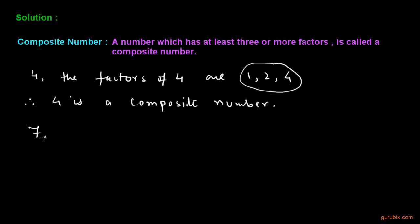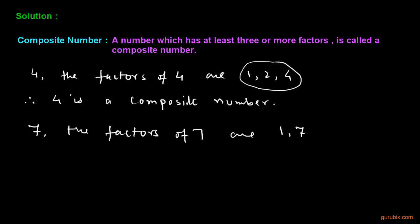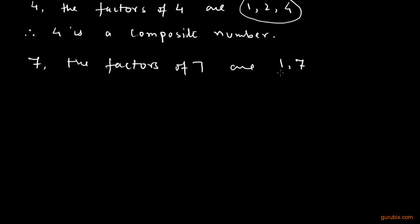Let us take another example that is 7 and the factors of 7 are 1 and 7 because 7 can be divided by 1 and itself only. So if we count them, these are 2 in counting. Therefore, 7 is a prime number.